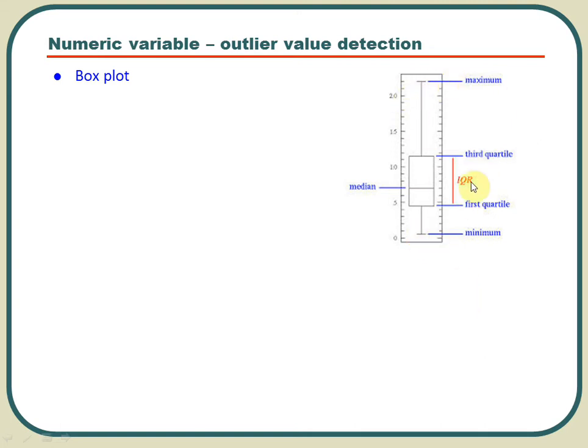Now using this IQR and these quartiles you can actually detect outliers easily. Anything which is beyond Q3 plus 1.5 times IQR should give you possible outliers. Anything which is less than Q1 minus 1.5 times IQR should also give you possible outliers.